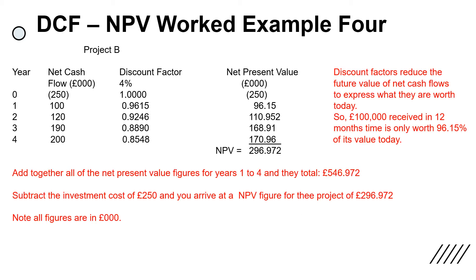Students often find NPV difficult to start with, but it's simply a matter of laying out your data in columns: year, net cash flow, discount factors, and net present value. If there is a question in the examination, IB will provide you with a table of discount factors — you just have to find out which percentage discount factor to use, and it will be specified in the question. Here I'm using a 4% discount factor. You take the net cash flows and multiply them by the discount factor to arrive at the net present value.